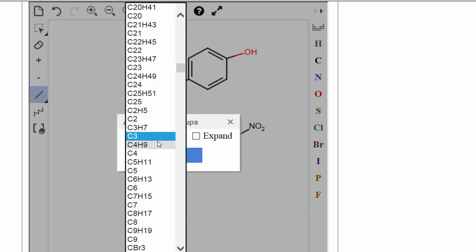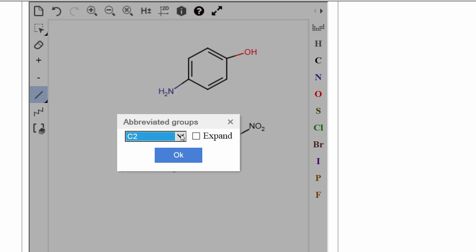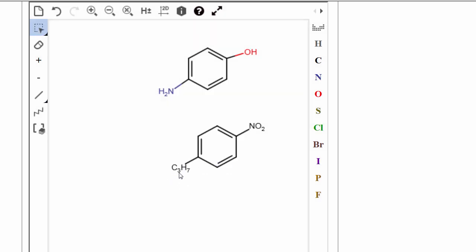Wait a minute. I want a C3H7. There we go. I'll click OK. And right here, I'll replace that methyl group with the propyl group.